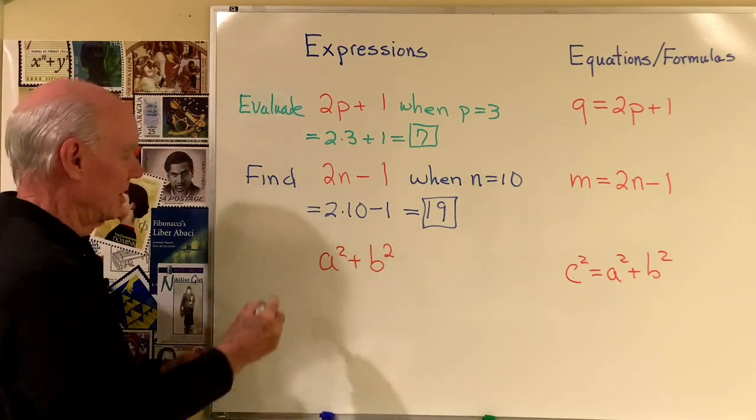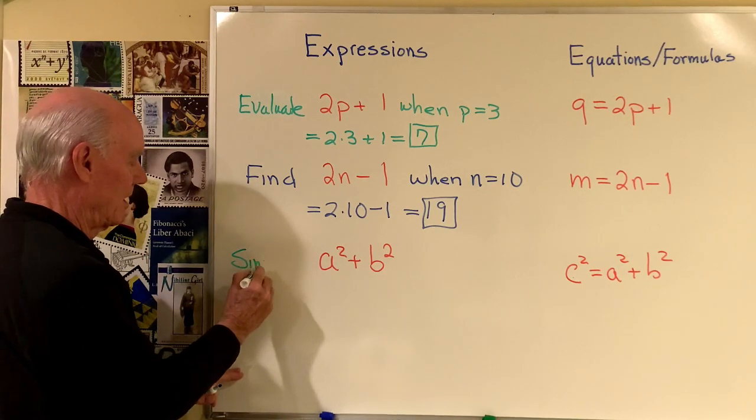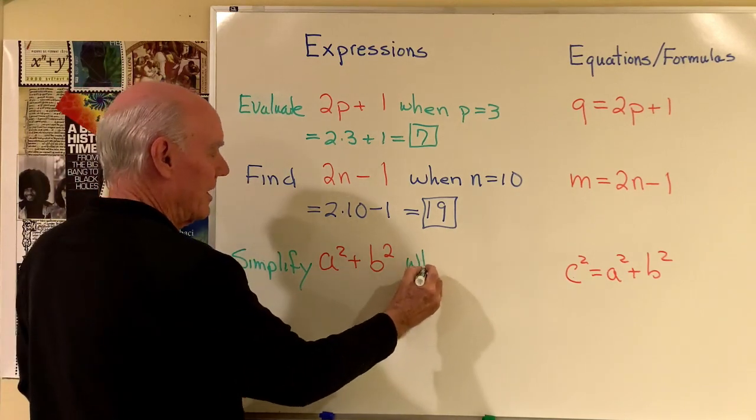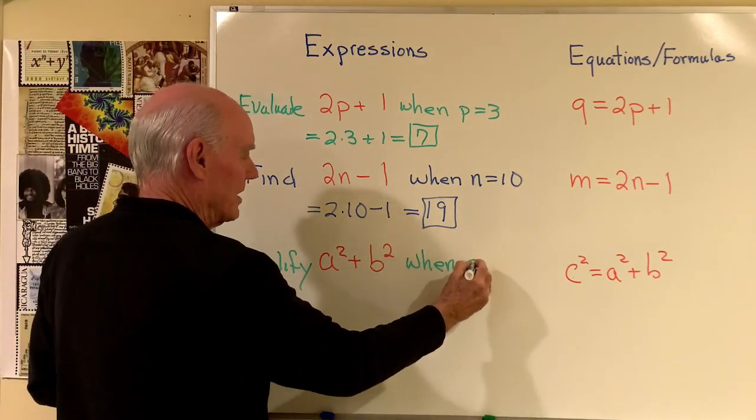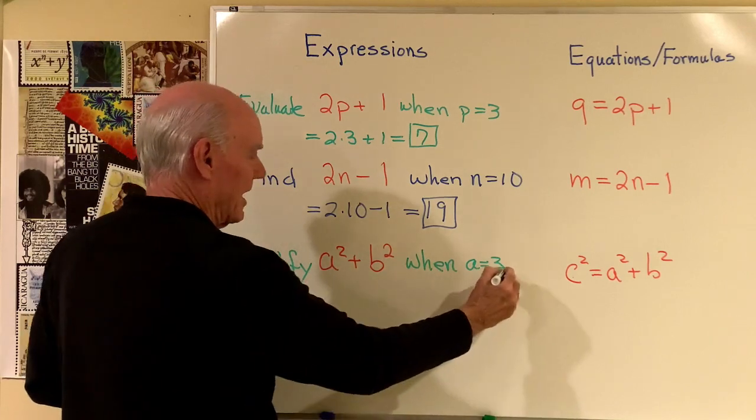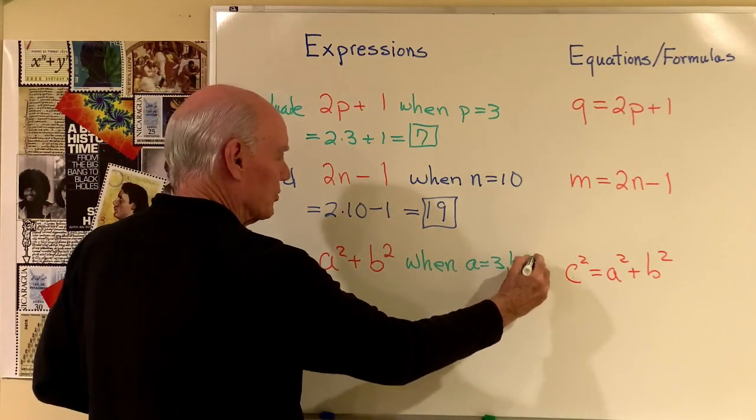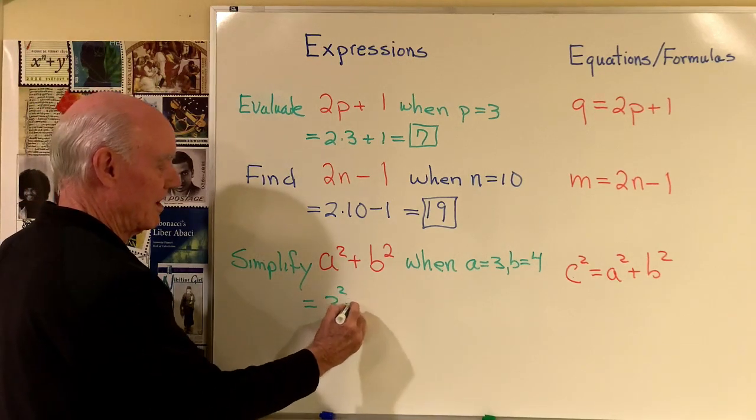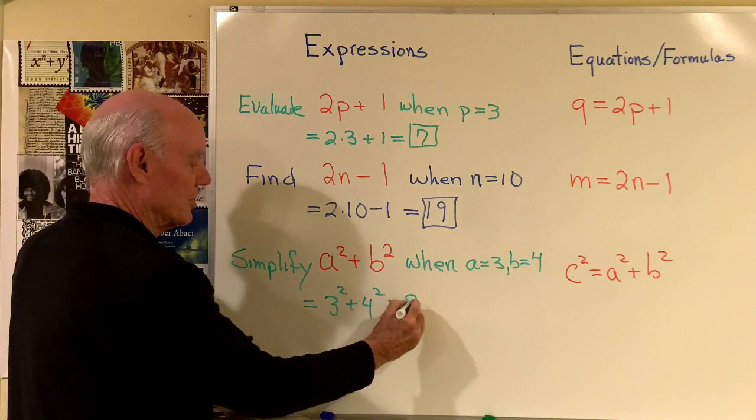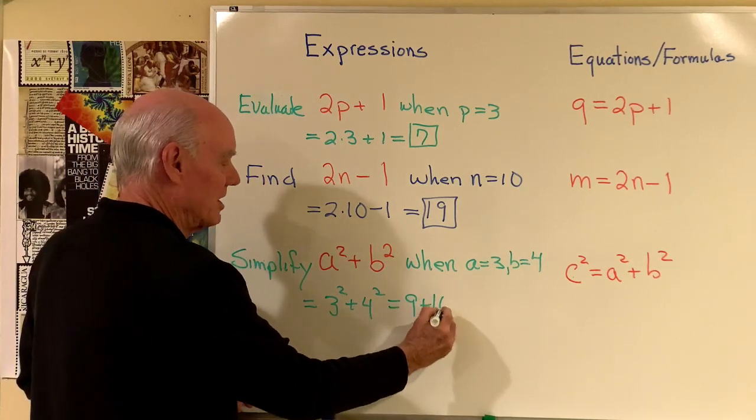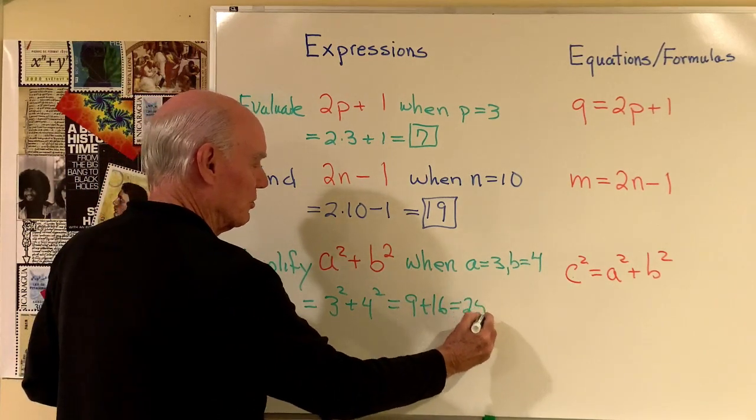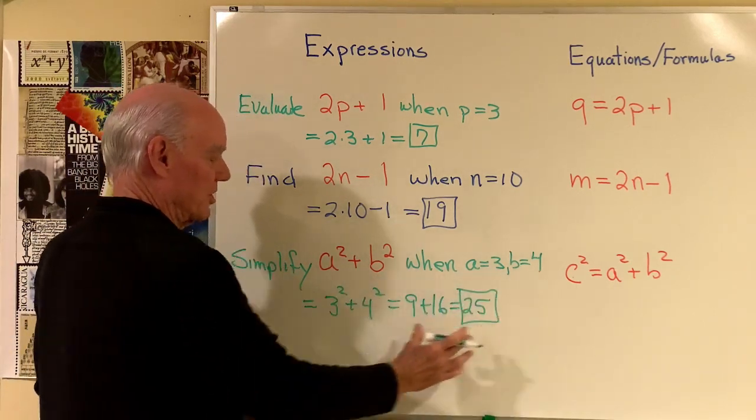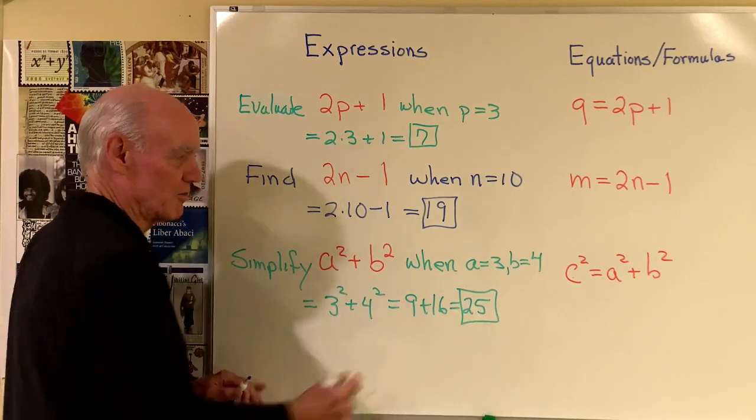Let's simplify this expression when A is equal to 3 and B is equal to 4. So then this expression becomes 3 squared plus 4 squared, which is 9 plus 16, which is equal to 25. So if I simplify this expression when A is 3 and B is 4, I substitute those numbers in, and I get 25.